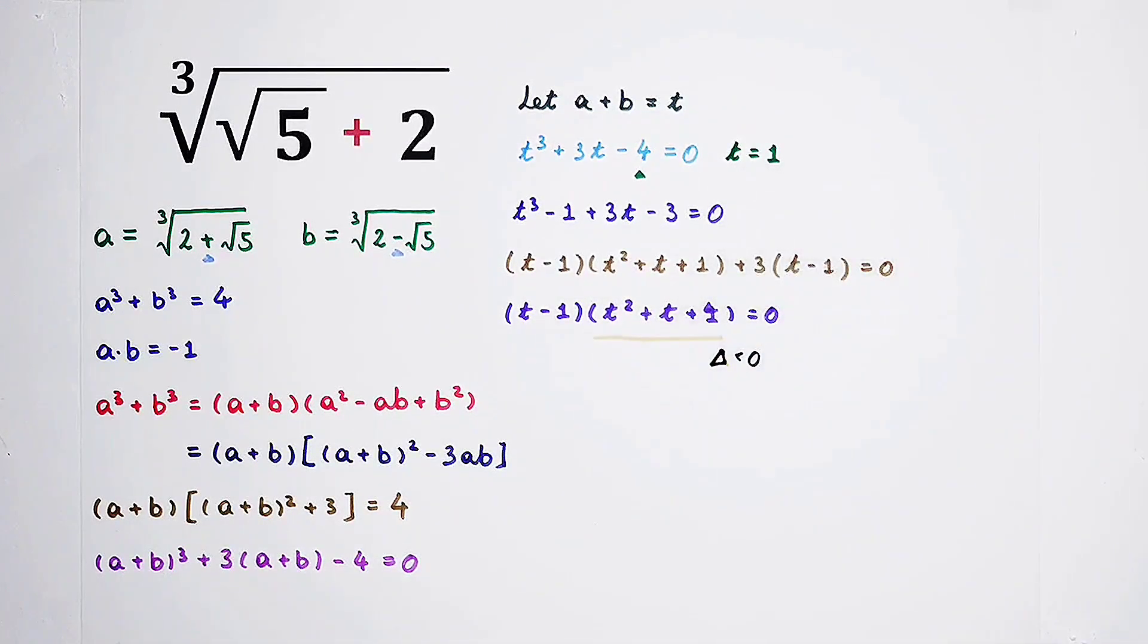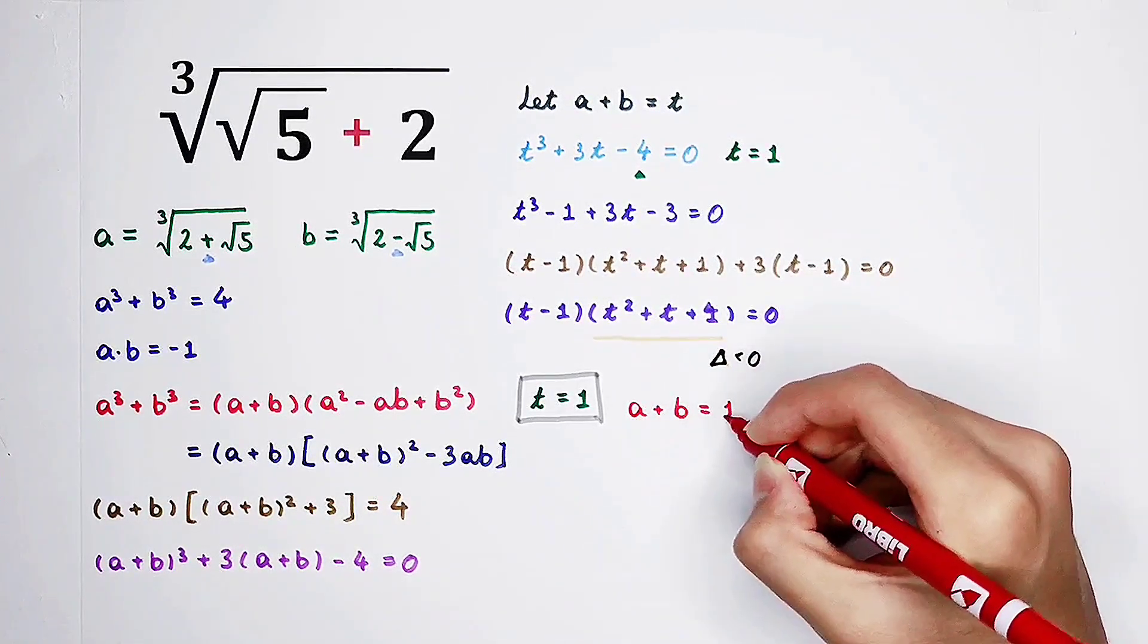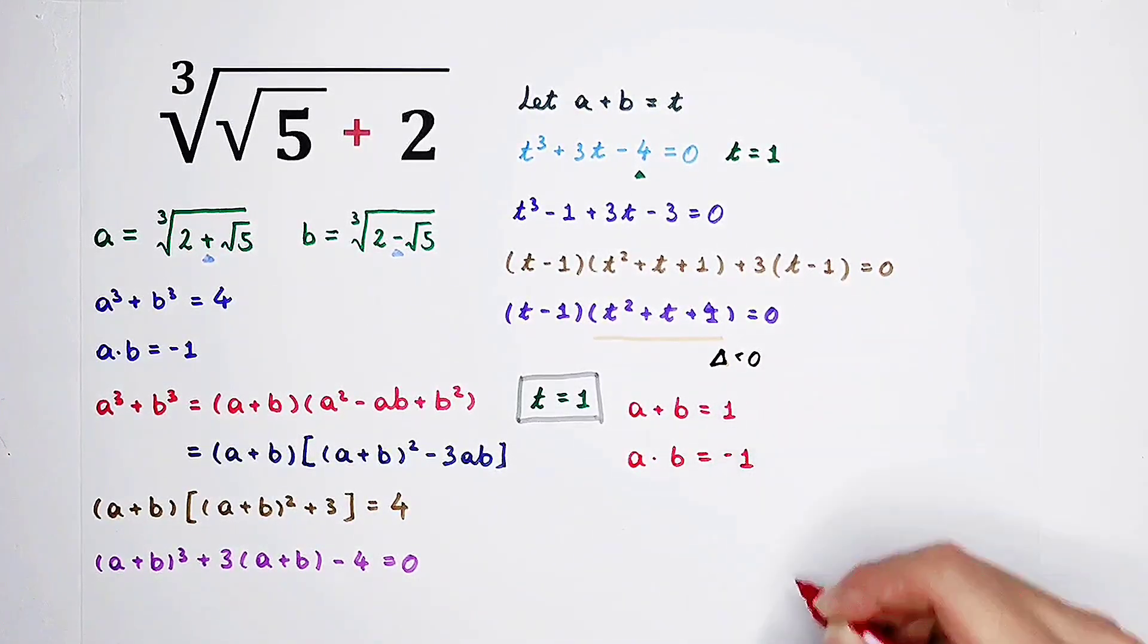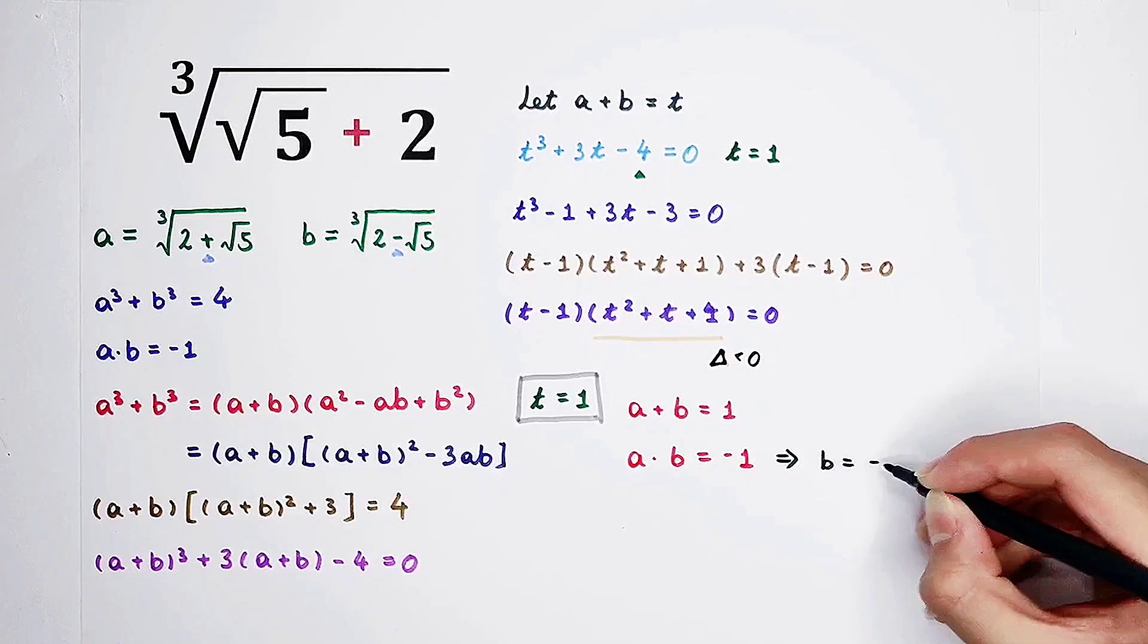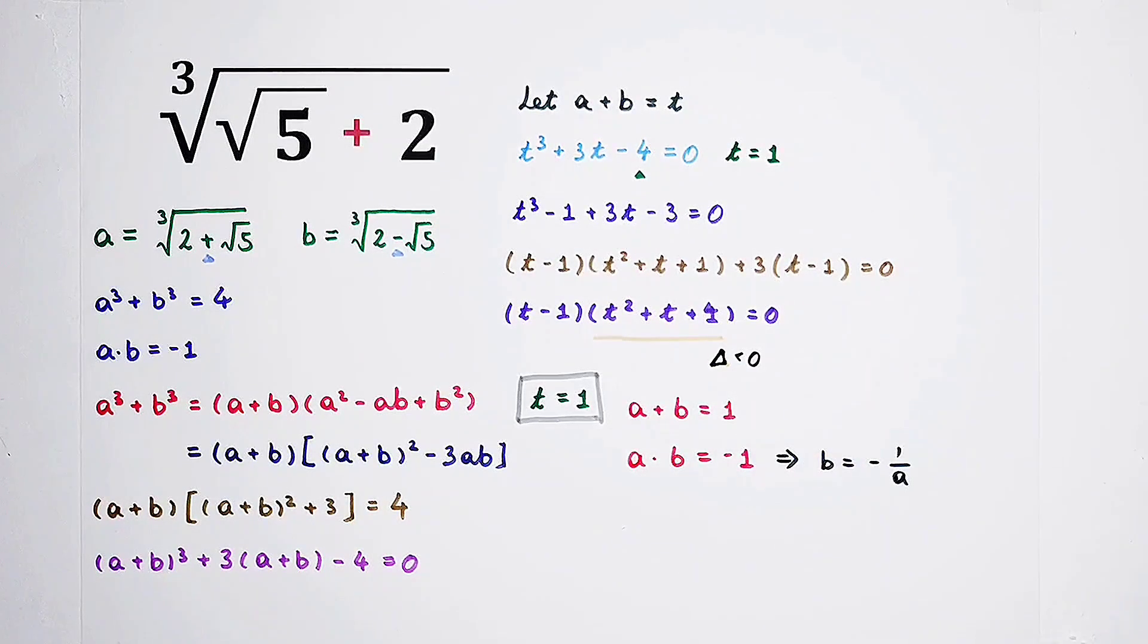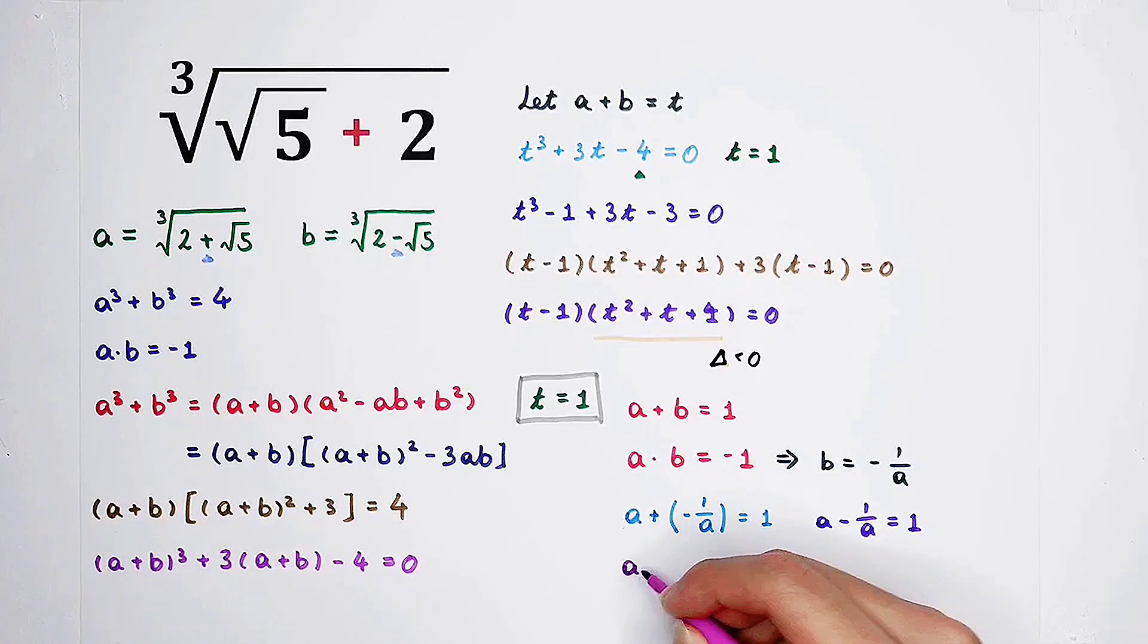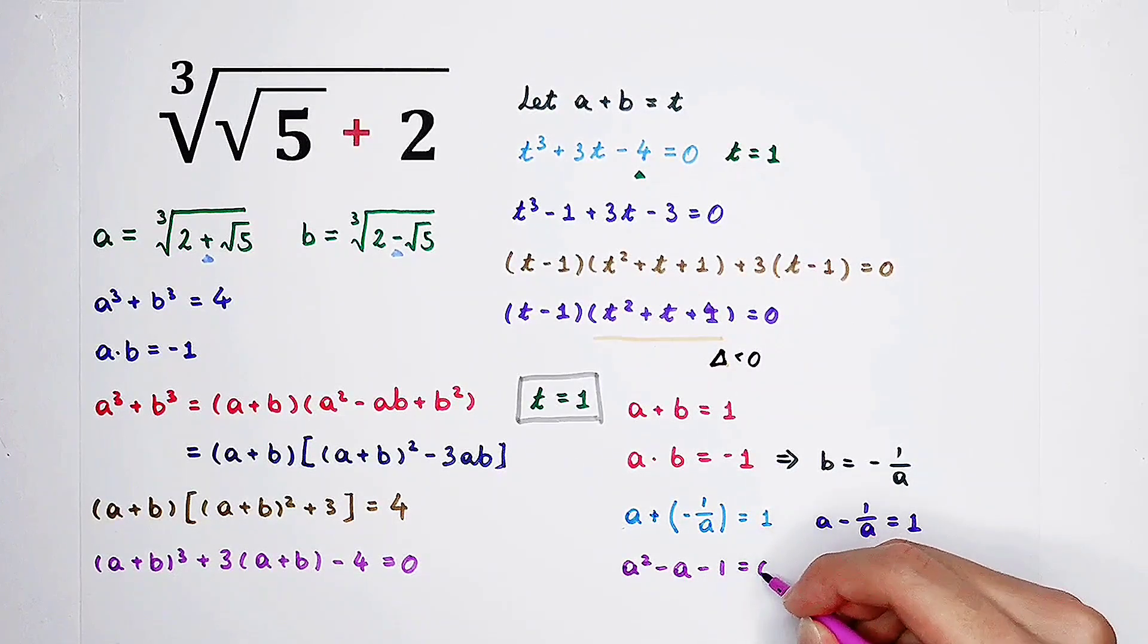So, we know that a plus b is t. So a plus b is 1. And the product of them is negative 1. So then, from the second equation, we can get b is actually negative 1 over a. And we can substitute this equation into our first equation. And we can get a quadratic equation about a. So then, multiply both sides by a. So it's going to be a squared minus a minus 1, which is equal to 0.